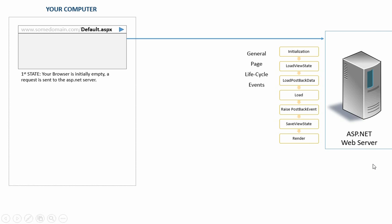Then the browser will wait for a response letter from the server. The browser knows that the response letter will be an HTML output, no matter whether the sender is a dynamic server like an ASP.NET web server or a static server. And once received, the browser will display this letter, which is actually an HTML output.